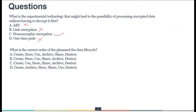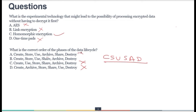The next question: What is the correct order of the phases of the data life cycle? We discussed CSU-SAD — Create, Store, Use, Share, Archive, Destroy. The correct answer is option B. Remember CSU-SAD — that is going to be your key.